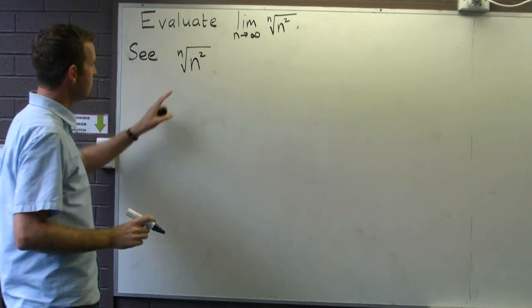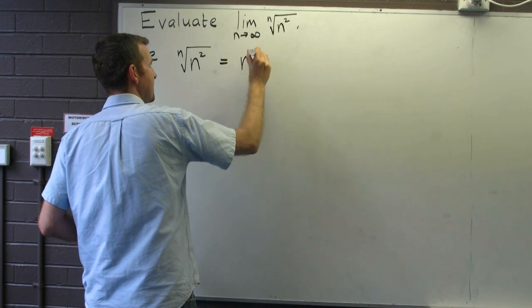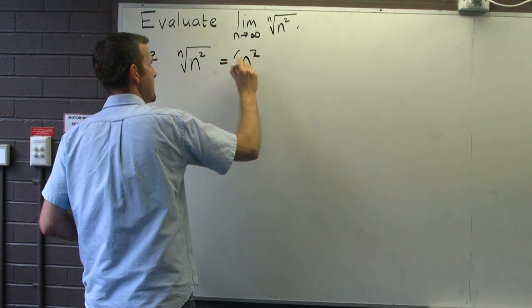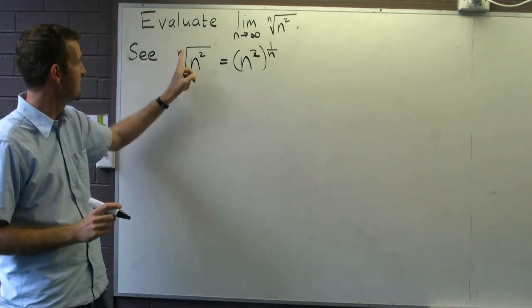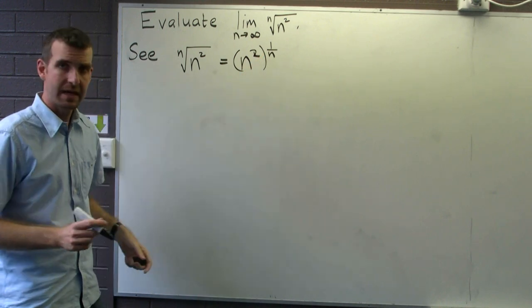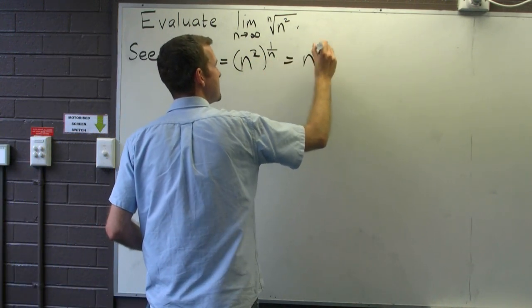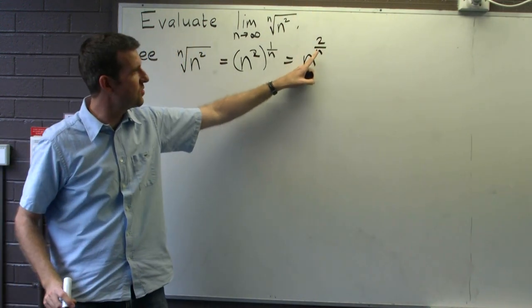So the nth root of n squared is just n squared to the power of 1 over n. So if we now use our exponent laws, we get n to the 2 over n.